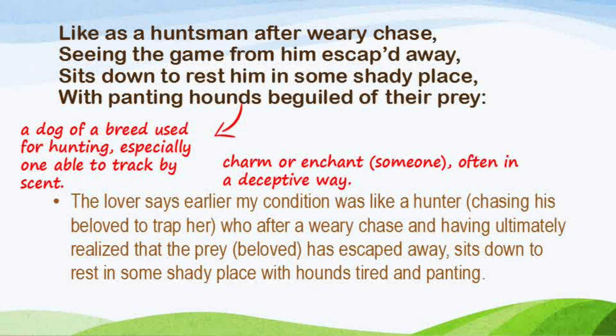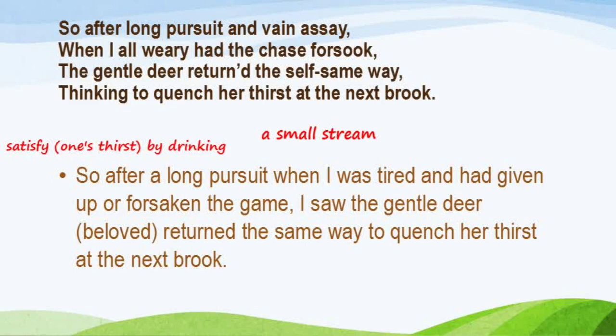After the hunter realizes the prey has escaped, he sits down to rest in some shady place — meaning he is tired from chasing and has realized the prey is beyond his reach. The final line of the first quatrain mentions 'panting hounds beguiled of their prey.' Hounds are a dog breed used for hunting — very fierce and ferocious. The word 'beguiled' means to charm or enchant someone, often in a deceptive way, so it carries a negative connotation.